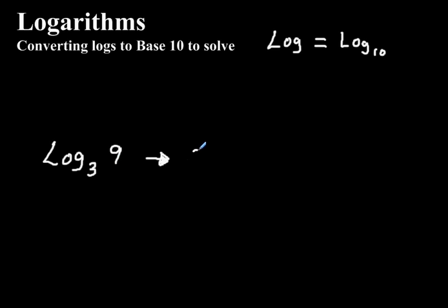Like this right here, remember 3, the base becomes that, equals 9. And then we're solving for the x here. Well that's pretty simple, we know that 3 squared is equal to 9.